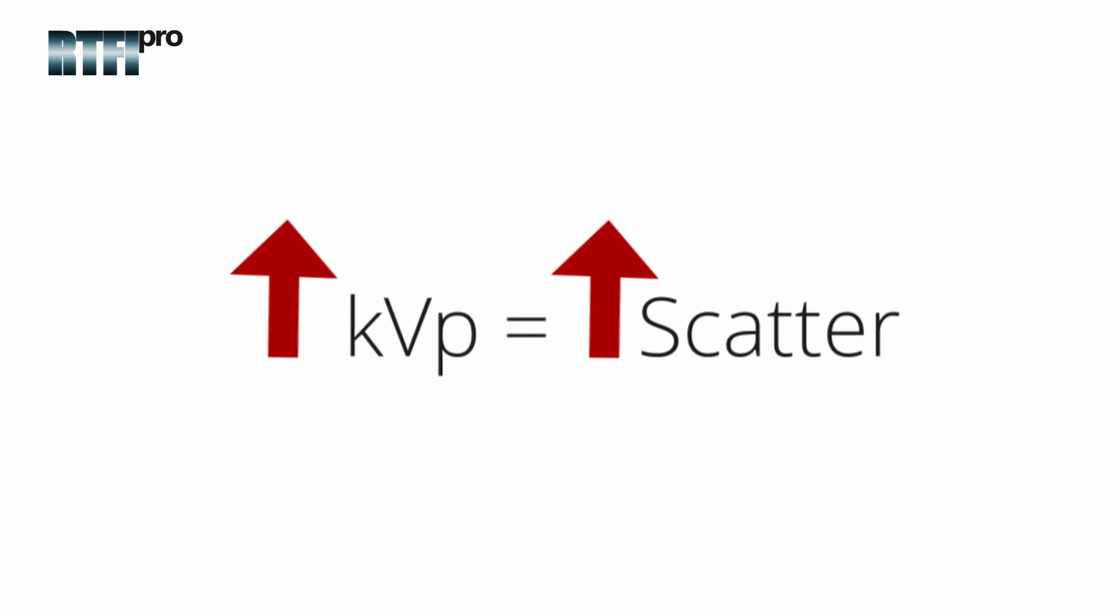Third, increase the KVP. Increasing the KVP increases the amount of scatter. As the energy level is increased, scatter radiation will be increased.